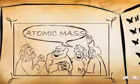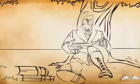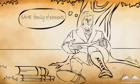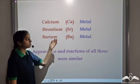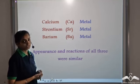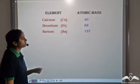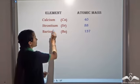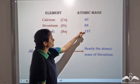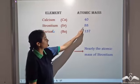One such scientist who was aware of the concept of atomic mass was J.W. Döbereiner. He had also studied some elements belonging to the same family. He observed three elements: calcium, strontium, and barium. The three of them are metals and they showed the same appearance and reactions, so according to him these three elements belong to the same family. Further, he observed that when he placed these three elements in increasing order of atomic mass, the average of the first and the third element came out to be 88.5, which was nearly equal to the atomic mass of strontium.